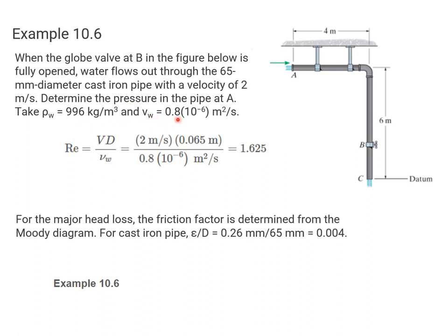The kinematic viscosity is 0.8 times 10 to the minus 6 square meters per second. Based on those values, we can calculate the Reynolds number. We know the velocity, the diameter of the pipe is 65 millimeters so we convert to meters, and the kinematic viscosity. The Reynolds number is 1.625 times 10 to the 5.